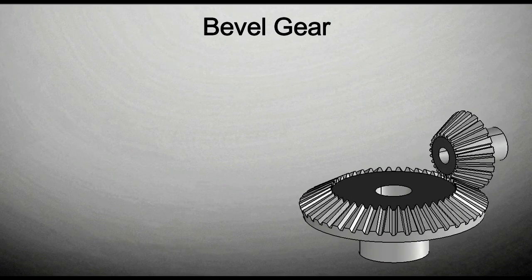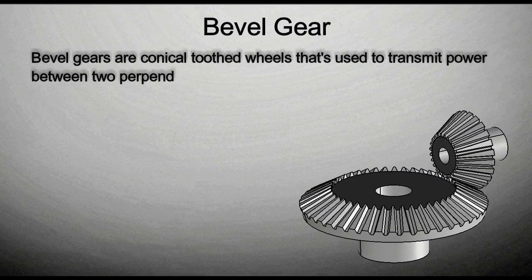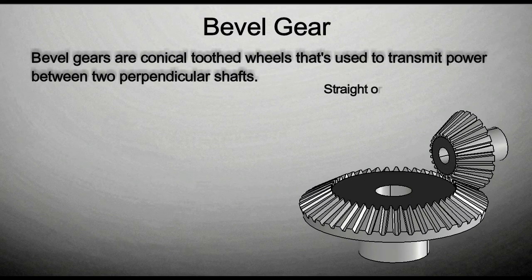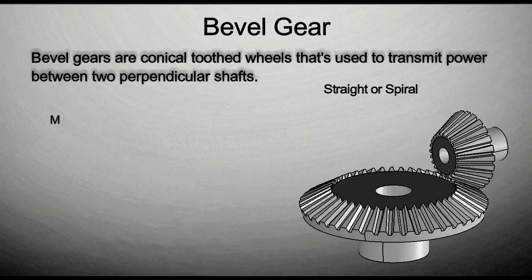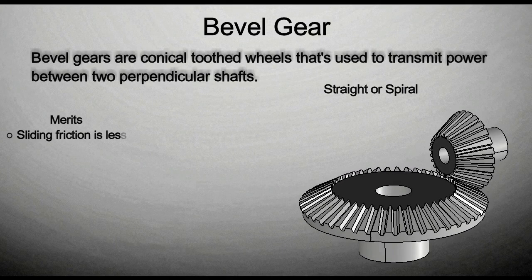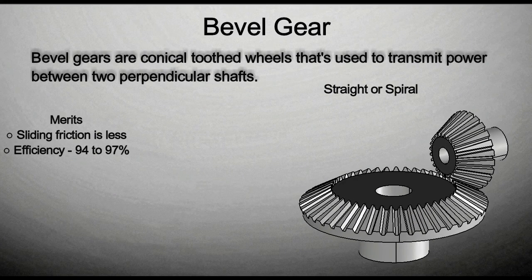Bevel gear. Bevel gears are conical toothed wheels that use to transmit power between two perpendicular shafts. Teeth of bevel gear can be either straight or spiral. Merits of bevel gear are, sliding friction is less, power transmission efficiency ranges between 94 to 97%.